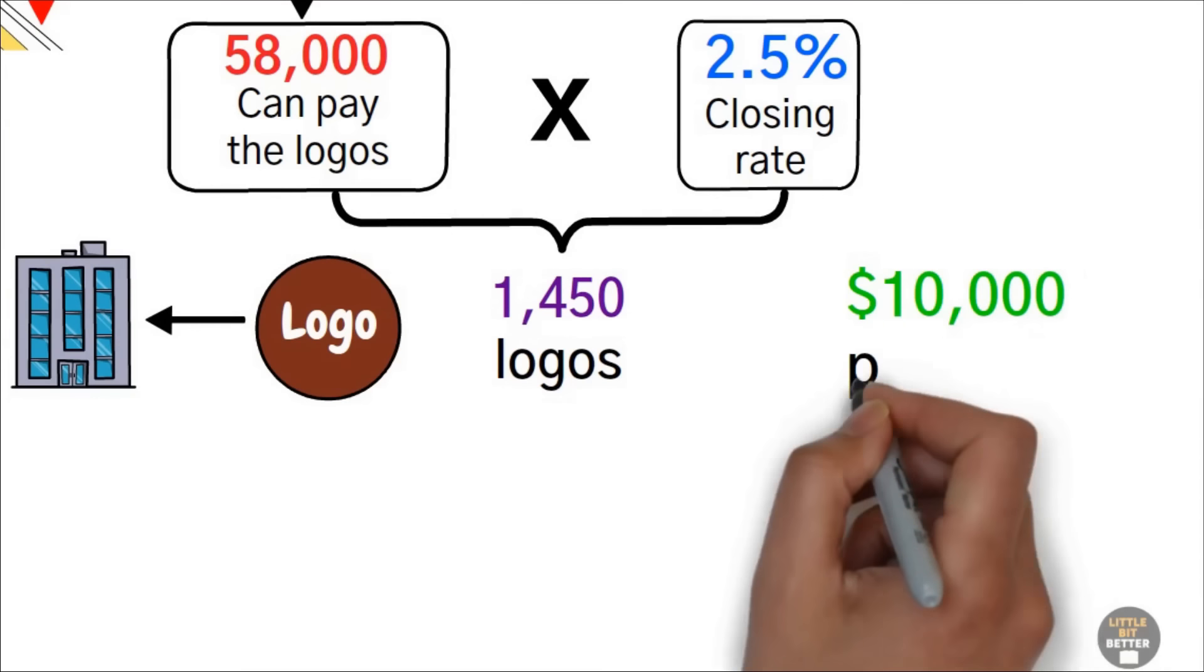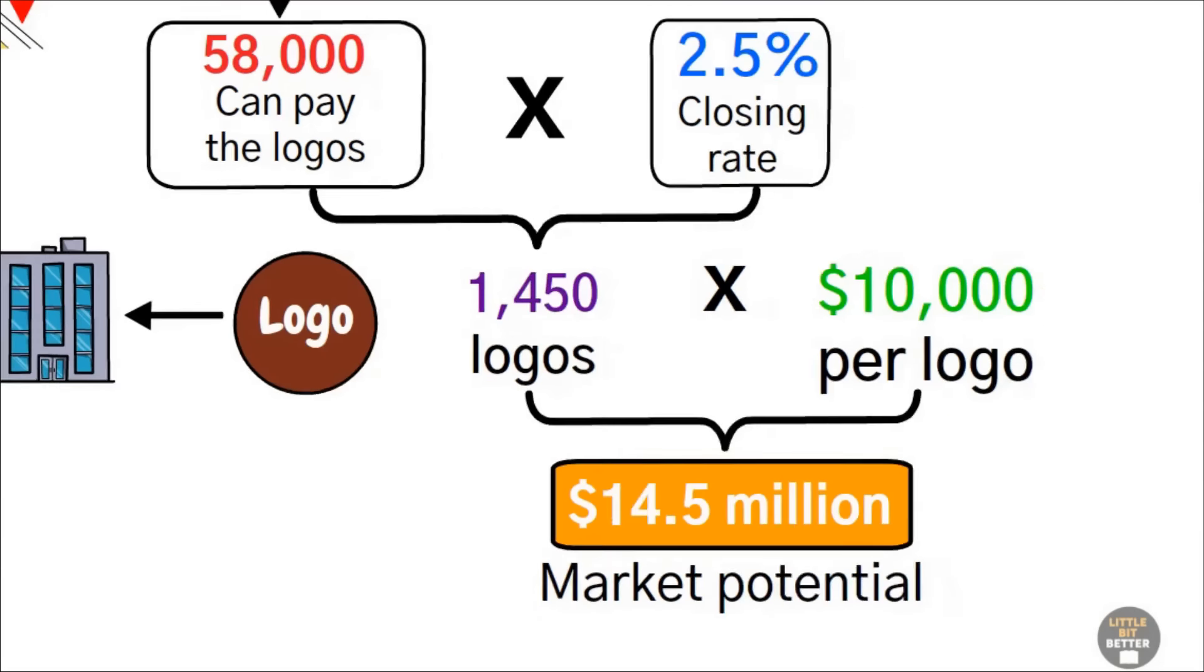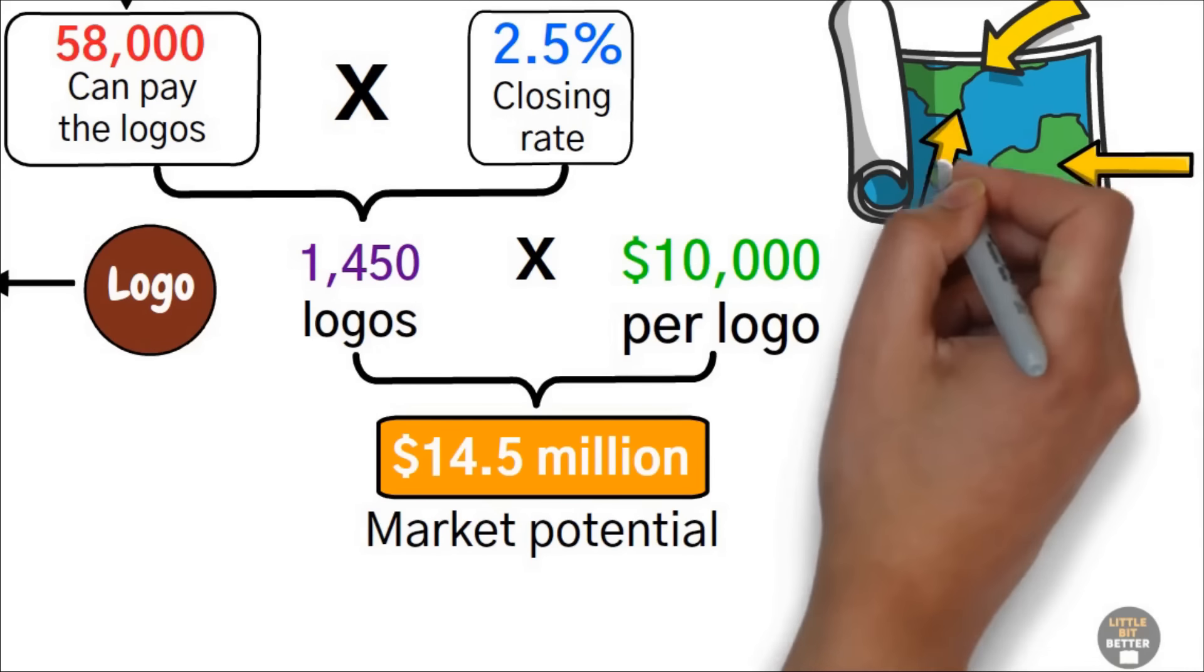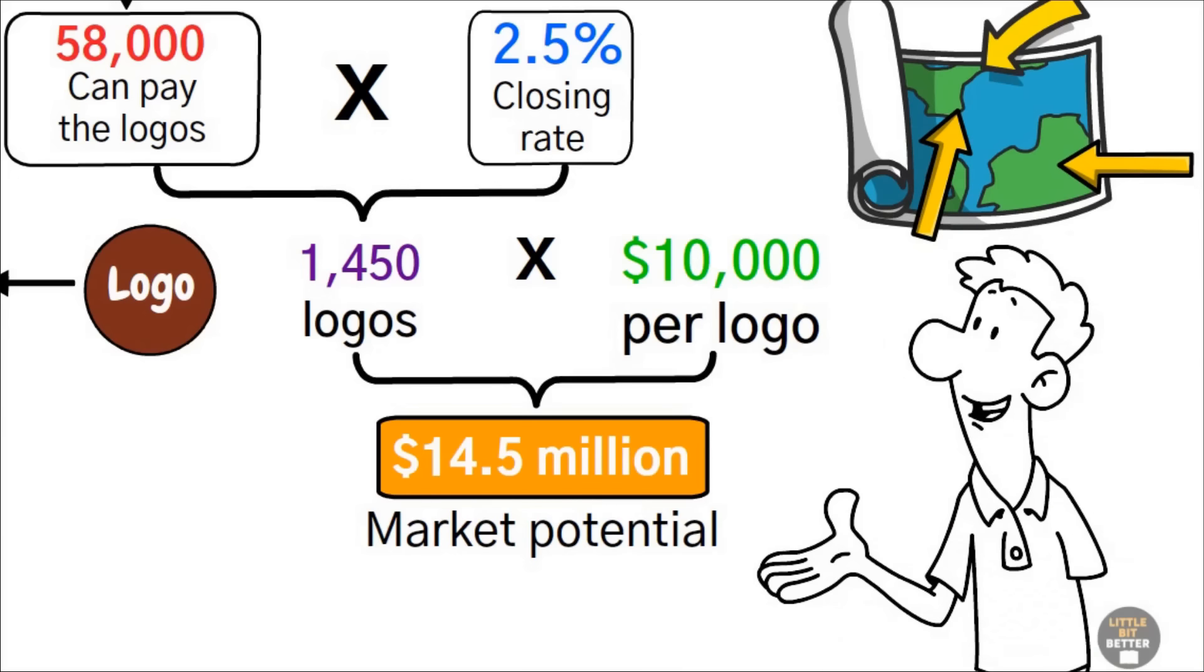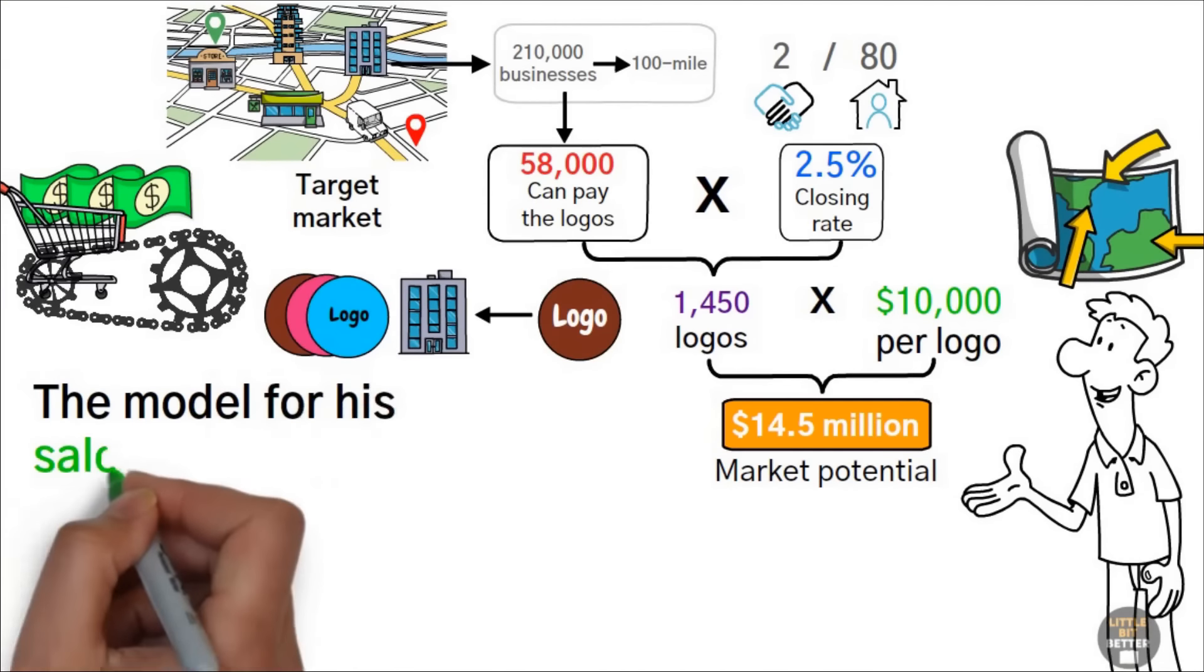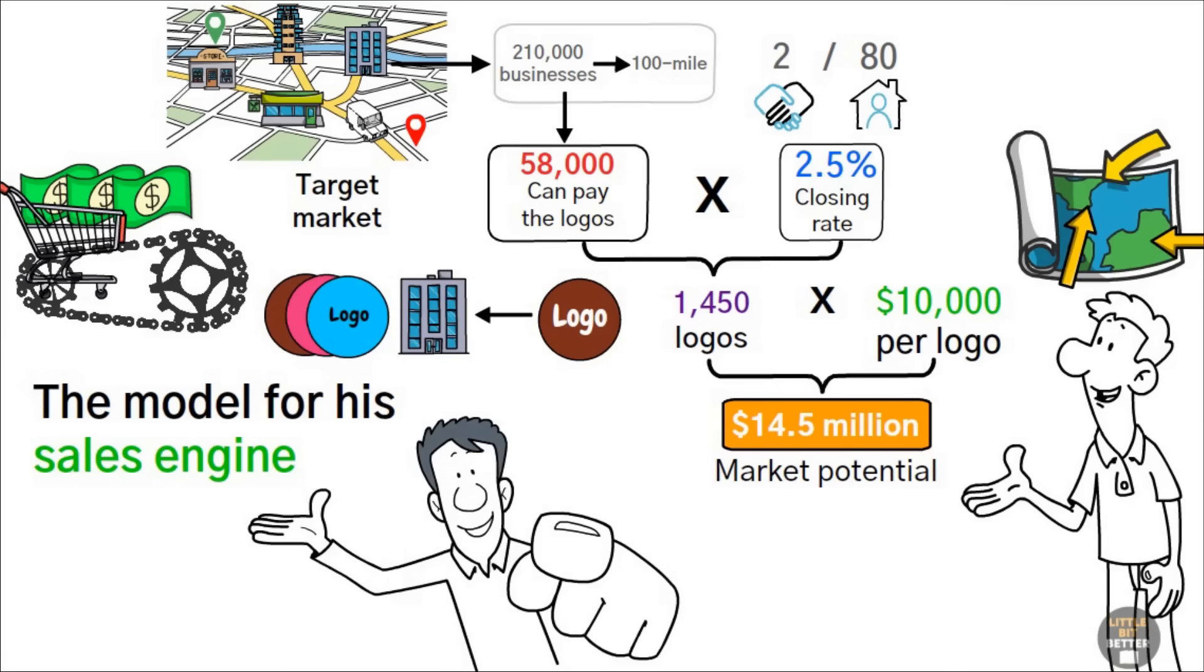Ted, at $10,000 per logo, that's $14.5 million in market potential here in town. And we're not even counting how big you could grow if you opened offices in other cities. Alex smiled. Ted explained that potential buyers would want to see the model for his sales engine, including how many opportunities he had and his historical closing rate. Ted was sure they'd love these numbers.